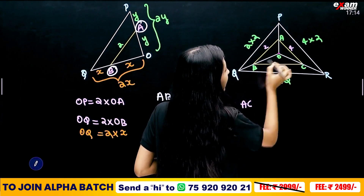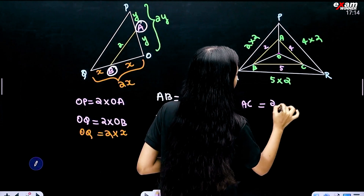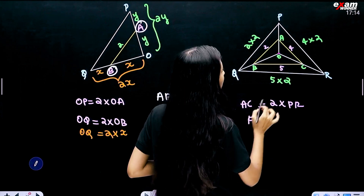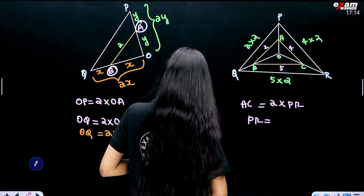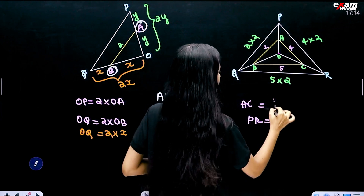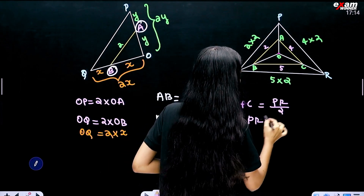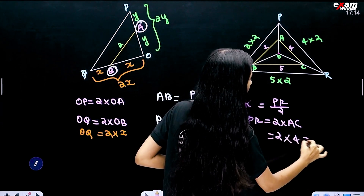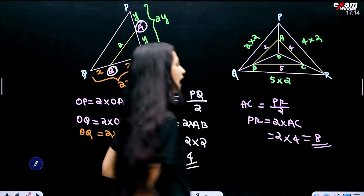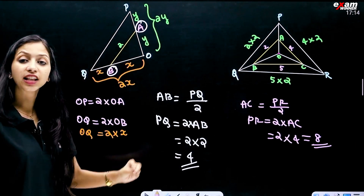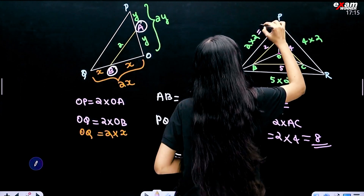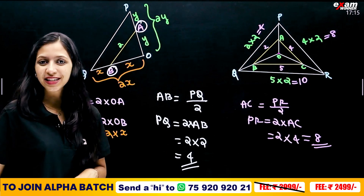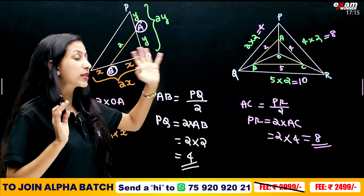What is AC? AC equals 4cm, so PR equals 2 into AC, which is 2 into 4, equal to 8cm. And QR is 10cm. We have more questions.